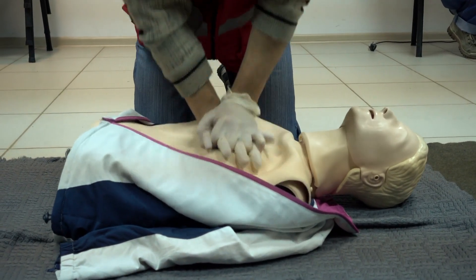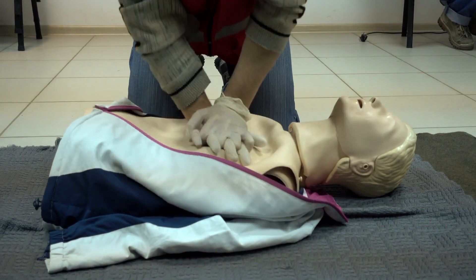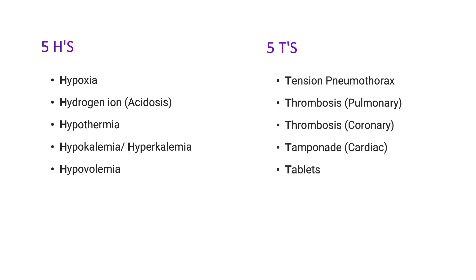We can also consider our reversible causes — our H's and T's. The five H's are: hypoxia, hydrogen ion acidosis, hypothermia, hyper- and hypokalemia, and hypovolemia. The five T's are: tension pneumothorax, pulmonary thrombosis, coronary thrombosis, cardiac tamponade, and drugs or tablets.